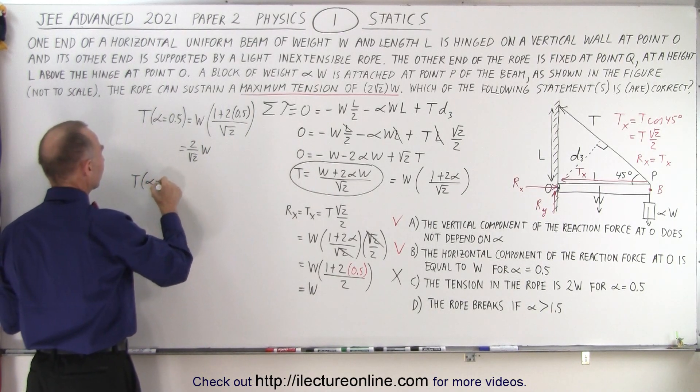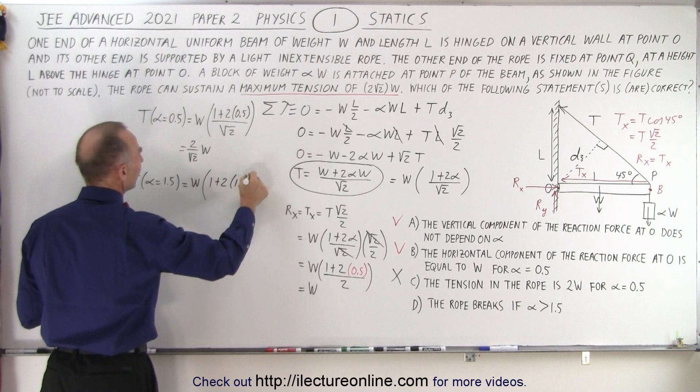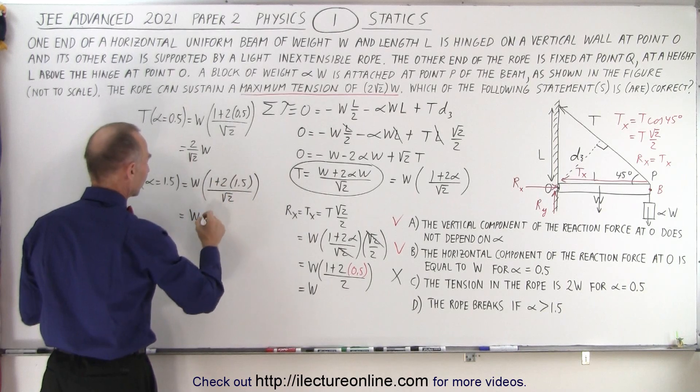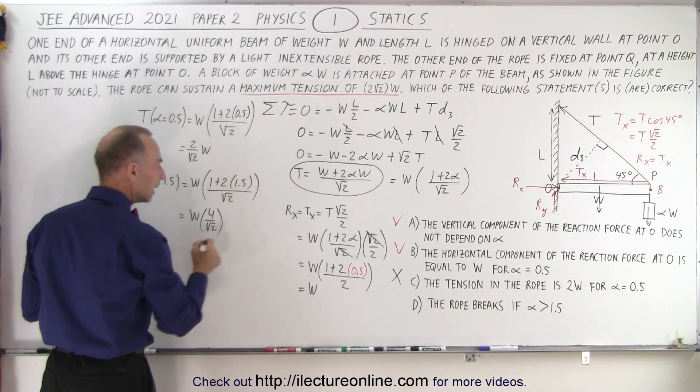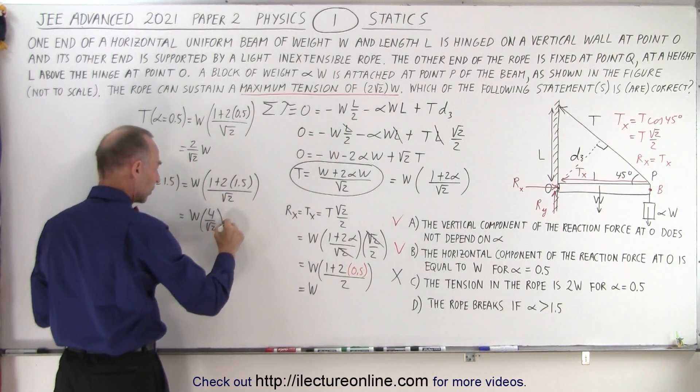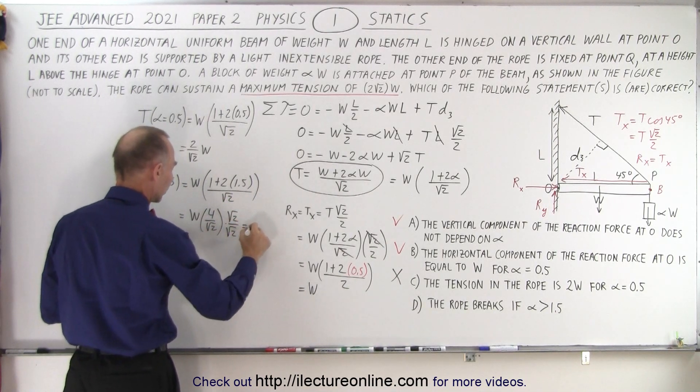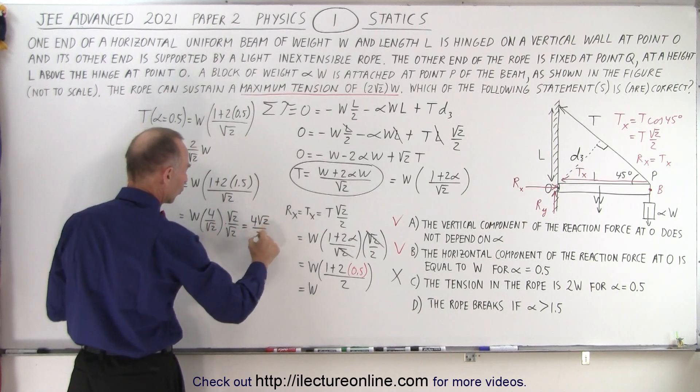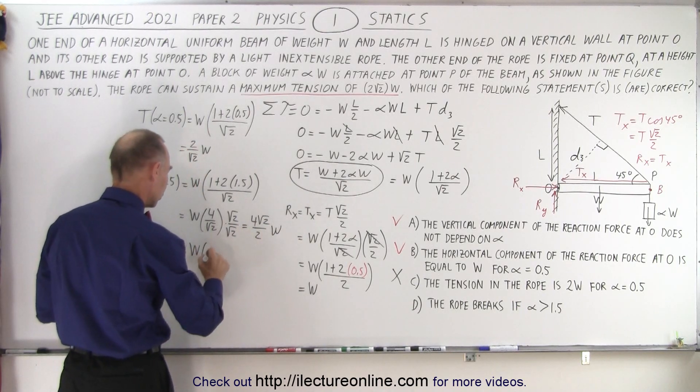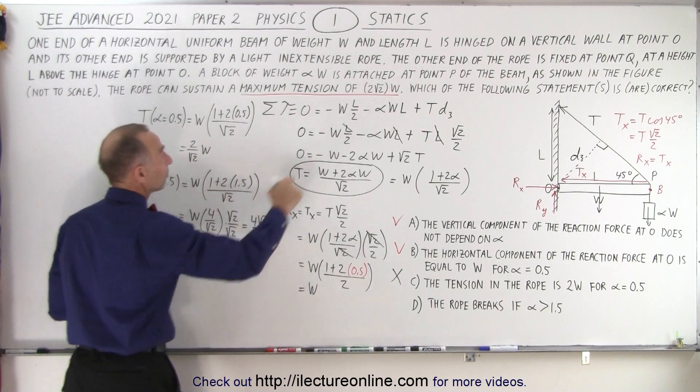The tension when alpha is equal to 1.5 is equal to W times 1 plus 2 times 1.5, divided by the square root of 2. So this is equal to W times, that's 3 plus 1 is 4, 4 divided by the square root of 2. If we multiply both the top and the bottom by the square root of 2 over 2, essentially rationalize the denominator, this becomes equal to 4 times the square root of 2 over 2. So this is equal to 2 times the square root of 2 times W.